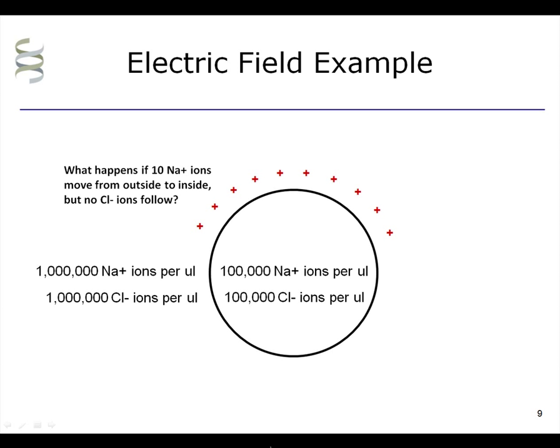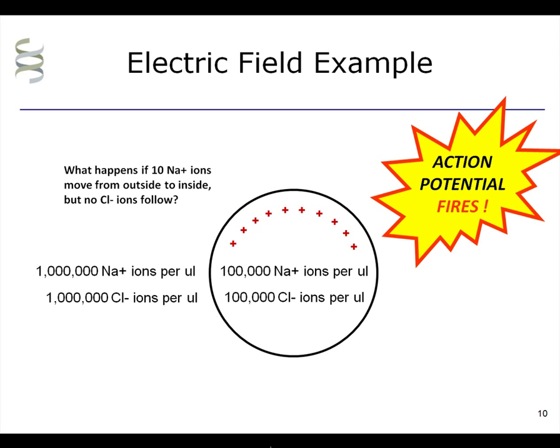This is the kind of ionic activity that might occur during the action potential. Surprisingly little sodium will enter the cell. Only 10 ions are shown here just to make the animation easier to follow. The number of ions would really depend on how wide and how long the axon was.